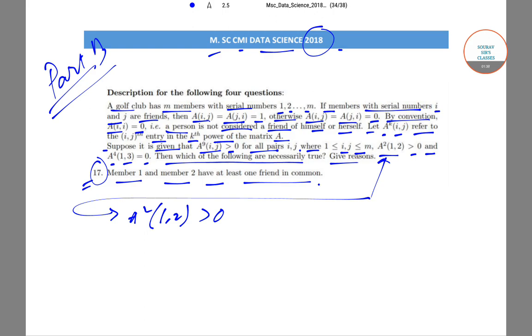So that means that A(1,K) is greater than 0 and A(K,2) is greater than 0. So they are greater than 0.